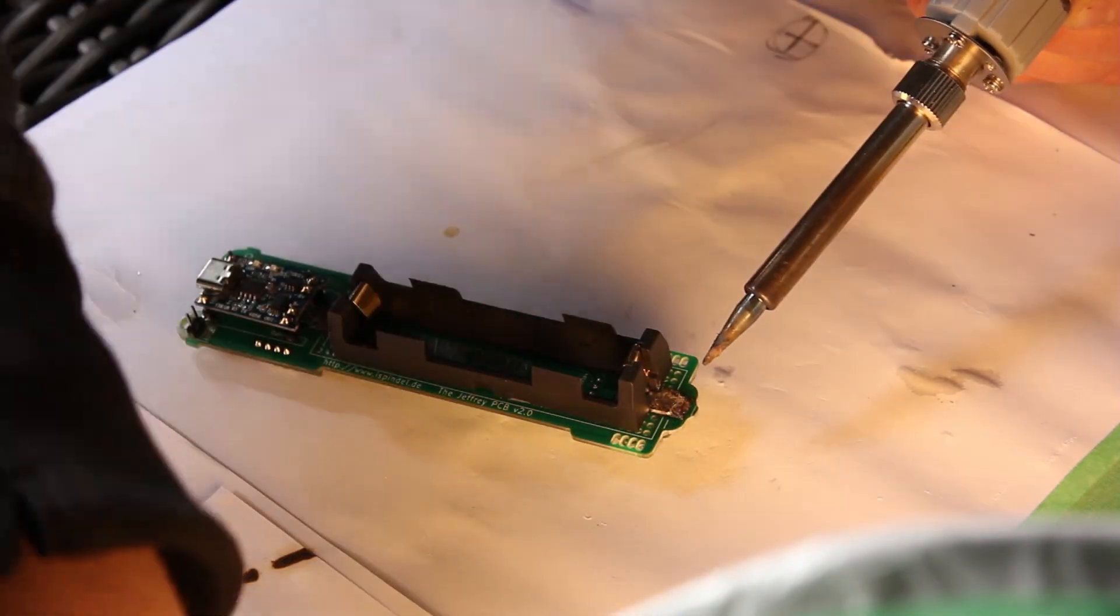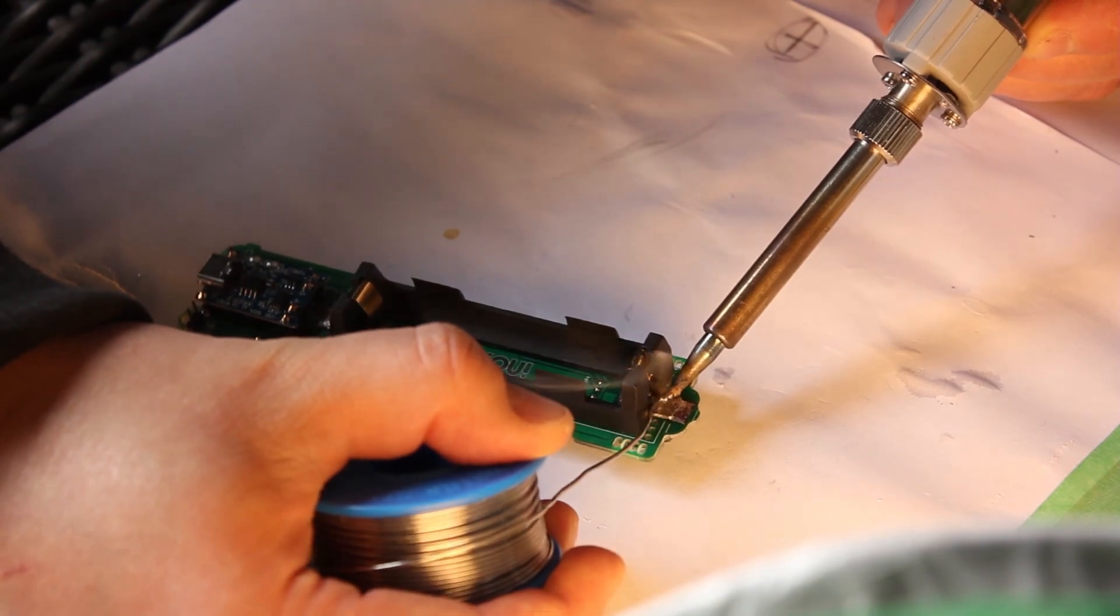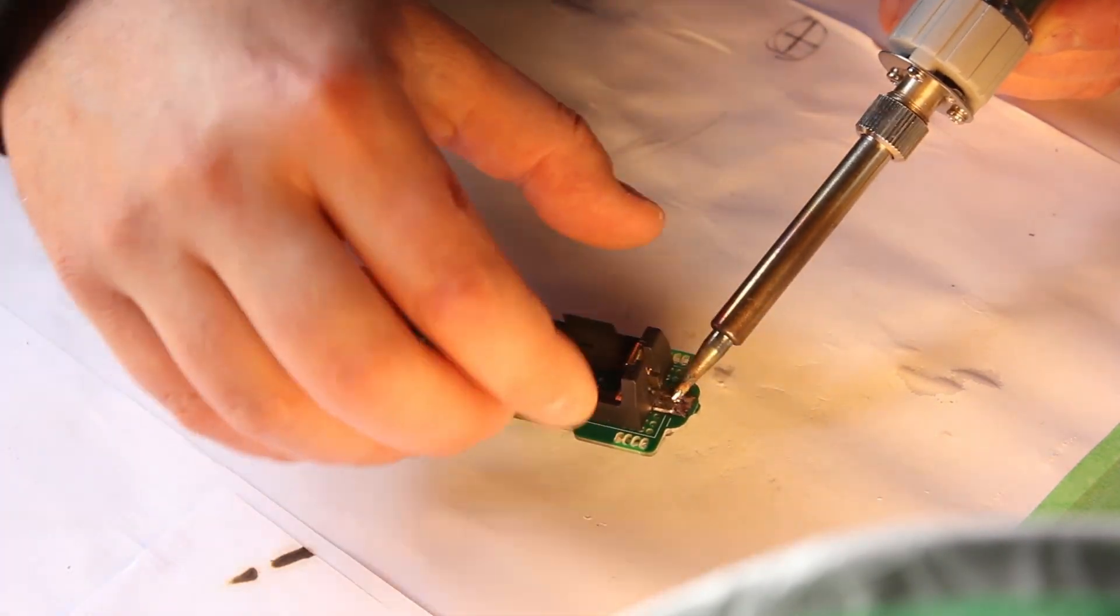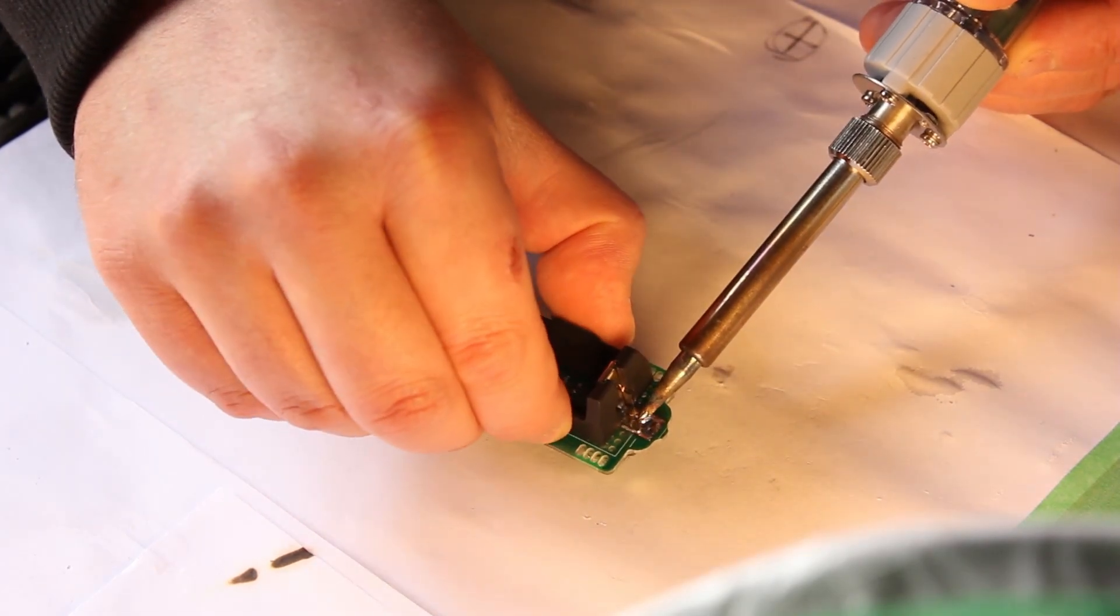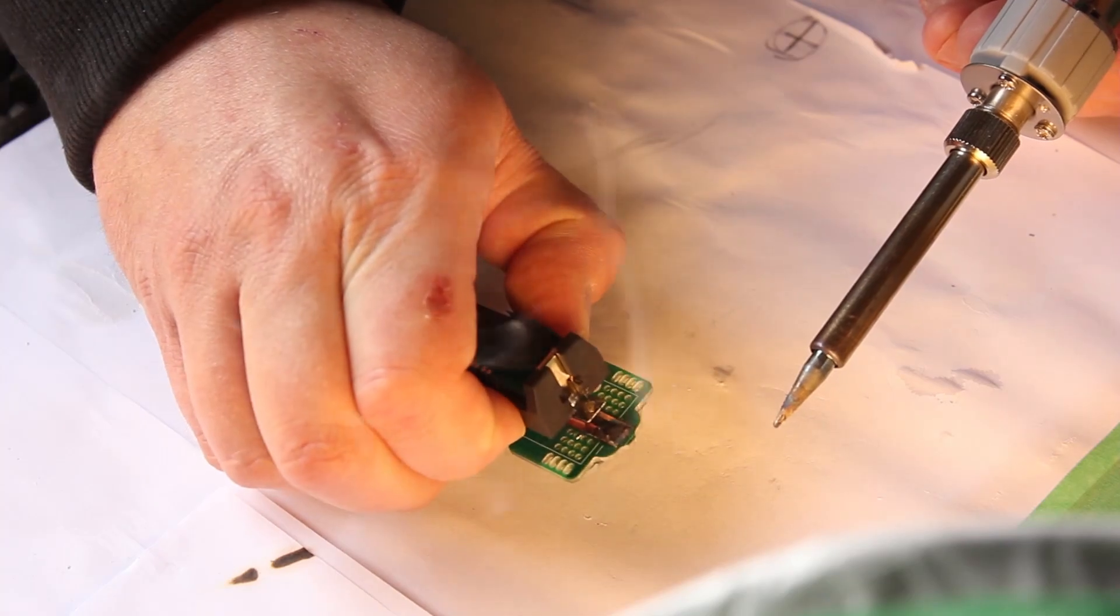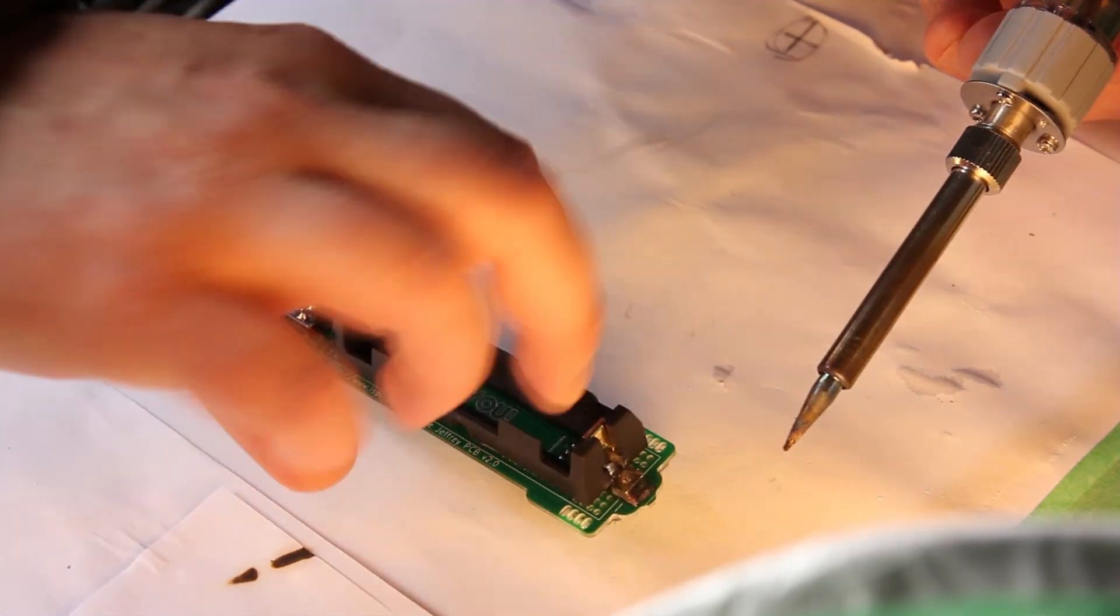The liquid solder that I add will act as a means of heat transfer and speed the process along. As I'm heating up, I'm taking my other fingers and kind of in a pinching action, creating upward force on the battery holder. I'm just applying that little bit of force as I'm heating the solder pad.